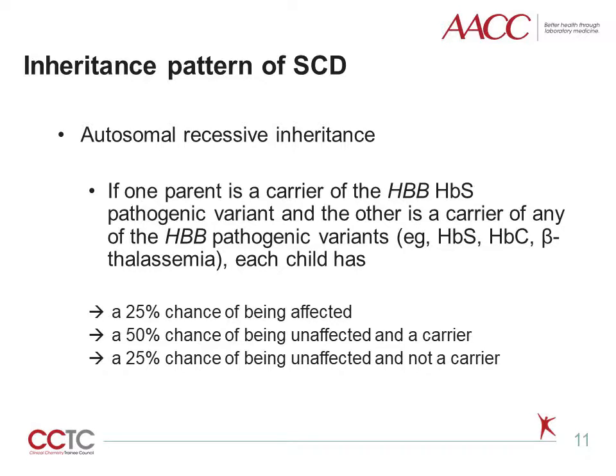Sickle cell disease is inherited in an autosomal recessive manner, which means if one parent is a carrier of the HbS pathogenic variant and the other is a carrier of any of the relevant beta-globin pathogenic variants, each child has a 25% chance of being affected, a 50% chance of being unaffected and a carrier, and a 25% chance of being unaffected and not a carrier.